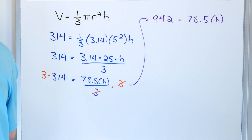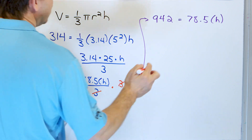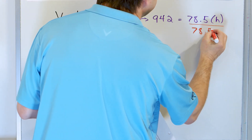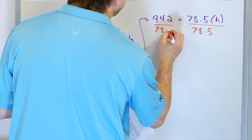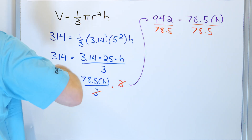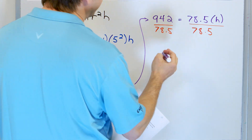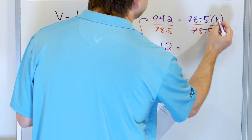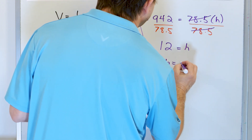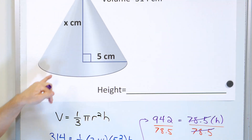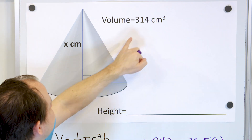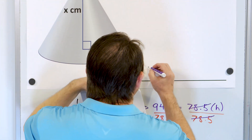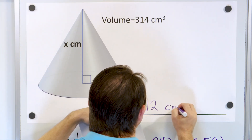Now, how do we solve for h? We're multiplying, so we're going to divide both sides by 78.5. If you take 942 and divide it by 78.5 in a calculator, you'll find that equals 12. These numbers cancel, and so all you have left is h, so h is 12. That's 12 centimeters — cubic centimeters for the volume, so it's just 12 centimeters. That's the answer.